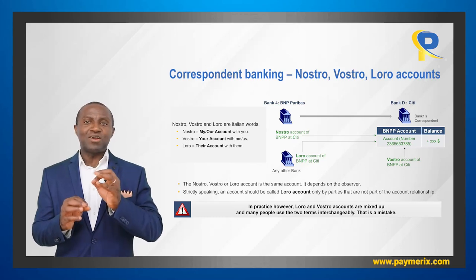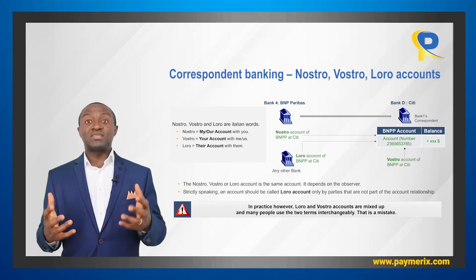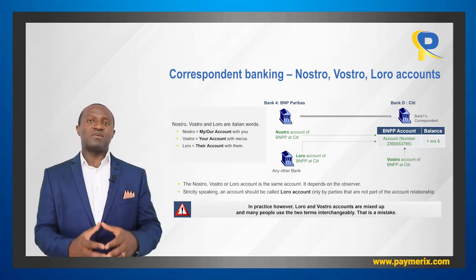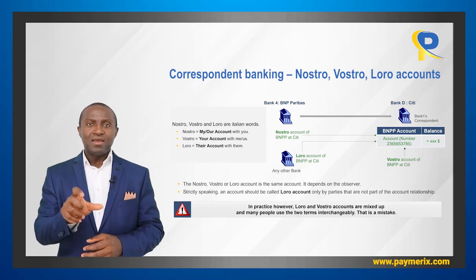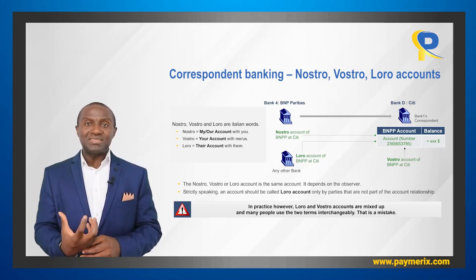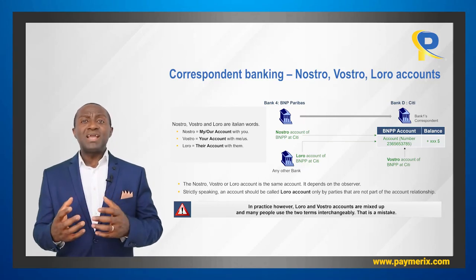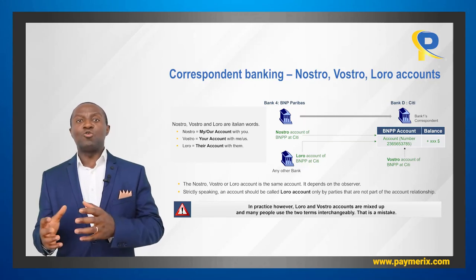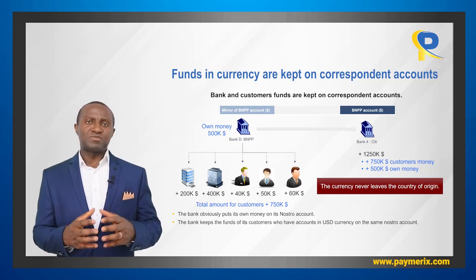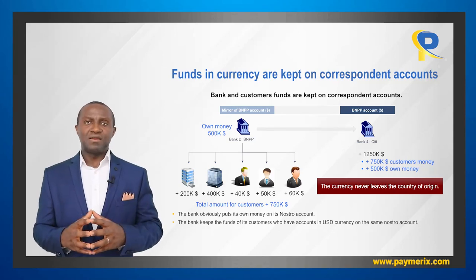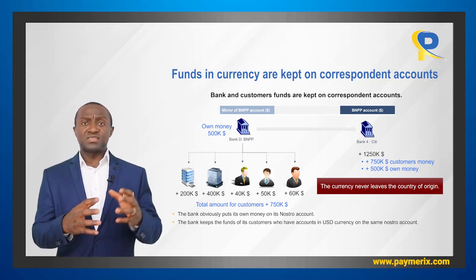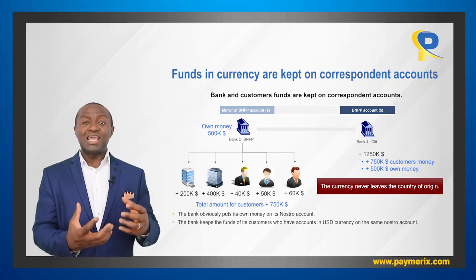Here are some tips to remember easily what a Nostro or Vostro account is. If you are working for a particular bank — that is your bank — the account of your bank which is held by another bank is the Nostro account; that account is not in the books of your bank. The account of another bank held by your bank is the Vostro account; that account is present in the book of your bank. The accounts of other banks that are not present in your books are called Loro accounts. Funds that BNPP has in currency are kept on the corresponding accounts — the bank puts its own money on its Nostro account, but also puts the funds of its customers who have accounts in the same currency on the same Nostro account.